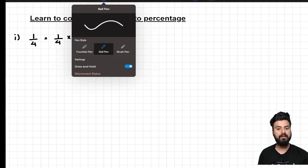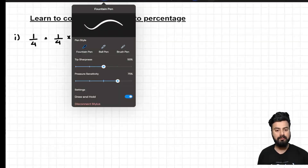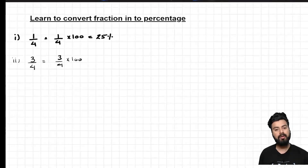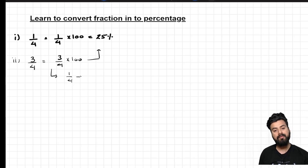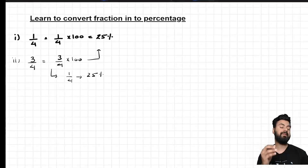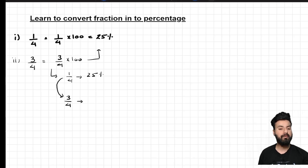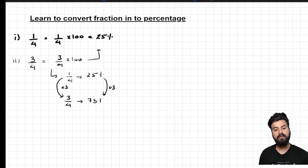Now, if someone asks what is 3/4 in terms of percentage, multiplying by 100 every time is not the best approach. Instead, since we already know 1/4 is 25%, we recognize that 3/4 is 3 times 1/4, so the percentage equivalent is also 3 times 25%, which is 75%. This is how you can directly calculate the percentage value of 3/4.